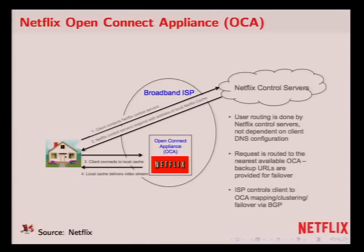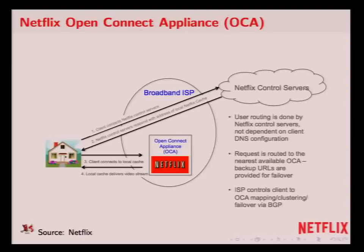When you have a set-top box at home and say you want to watch a video, the box sends a request to our control plane — basically a server in the cloud that tells it: you want this video, let me look to see where all the videos are and see which one is close to you. Here's a URL for the video that will be best for you. It does this by looking at how loaded the servers are, where the servers are, what offload capacity we have, and all of these things. Then it assigns a server.